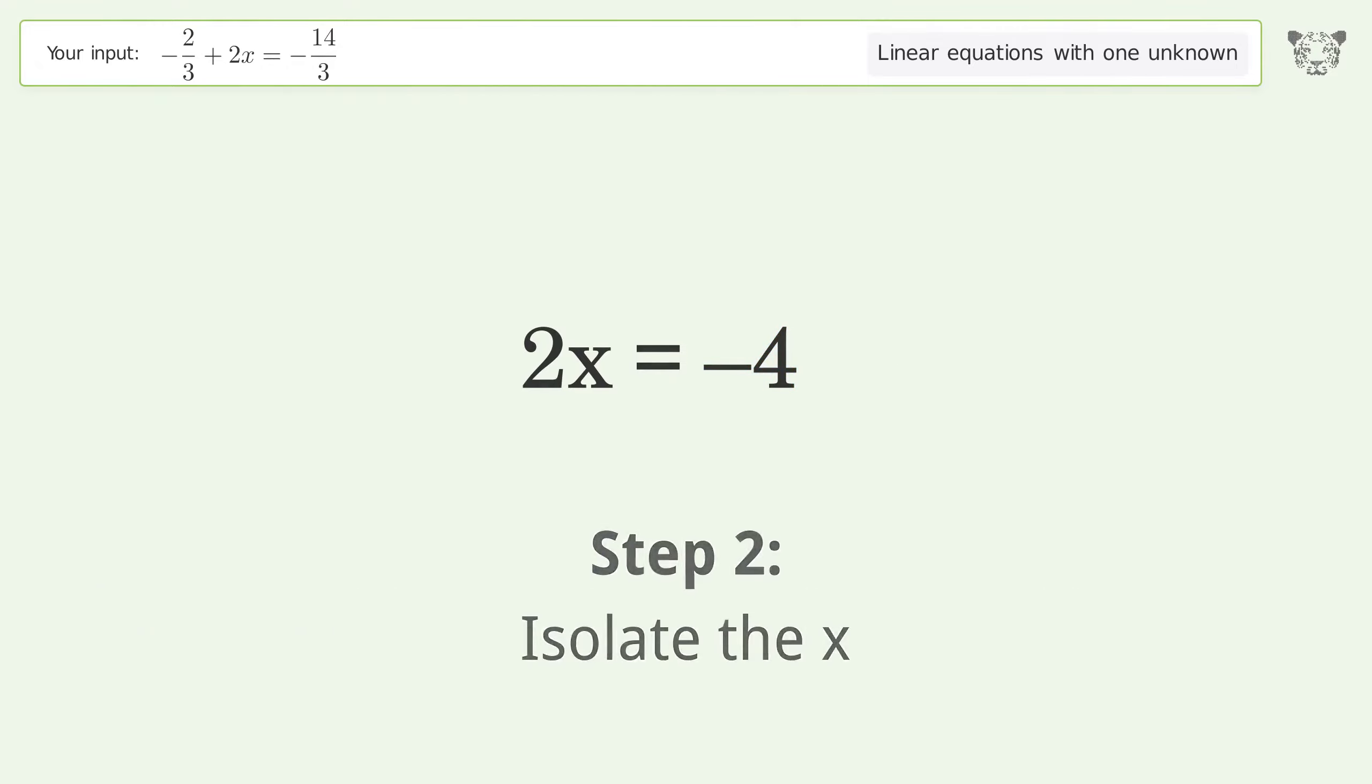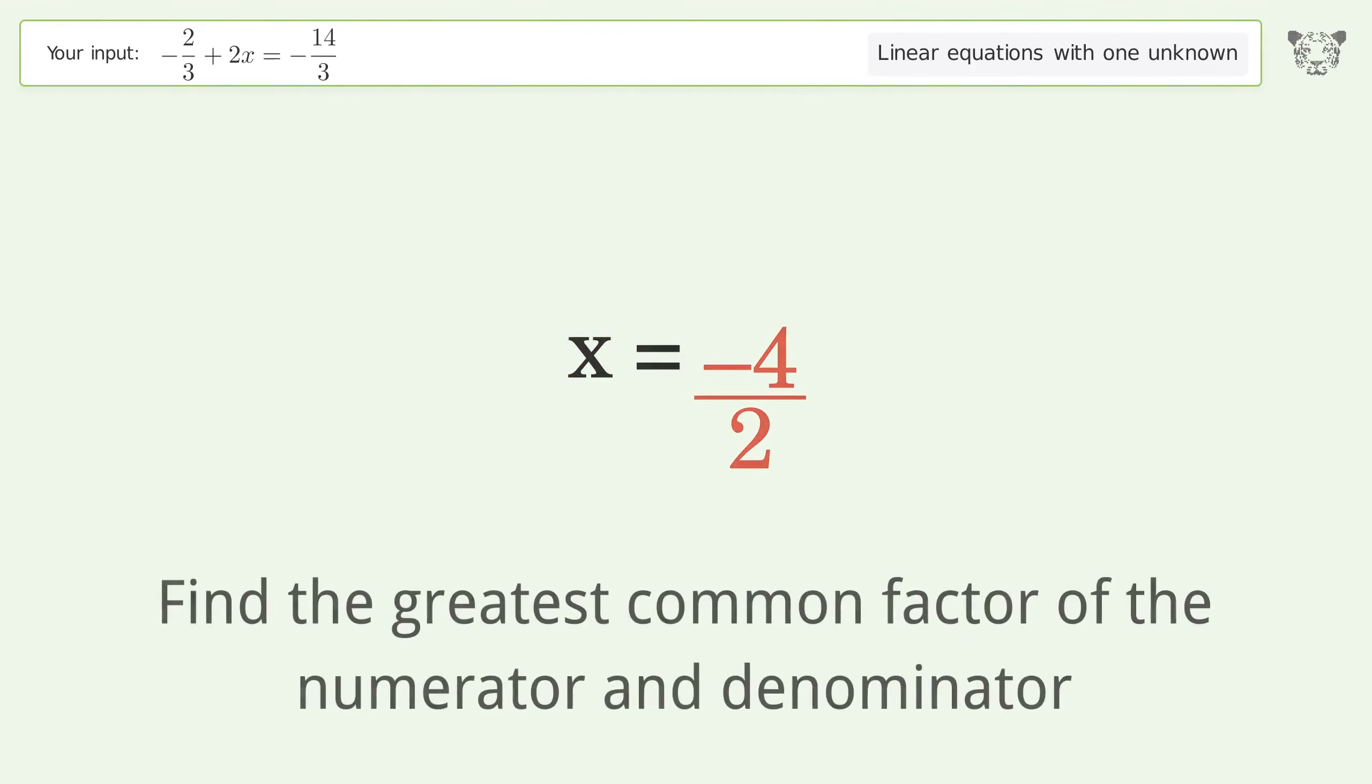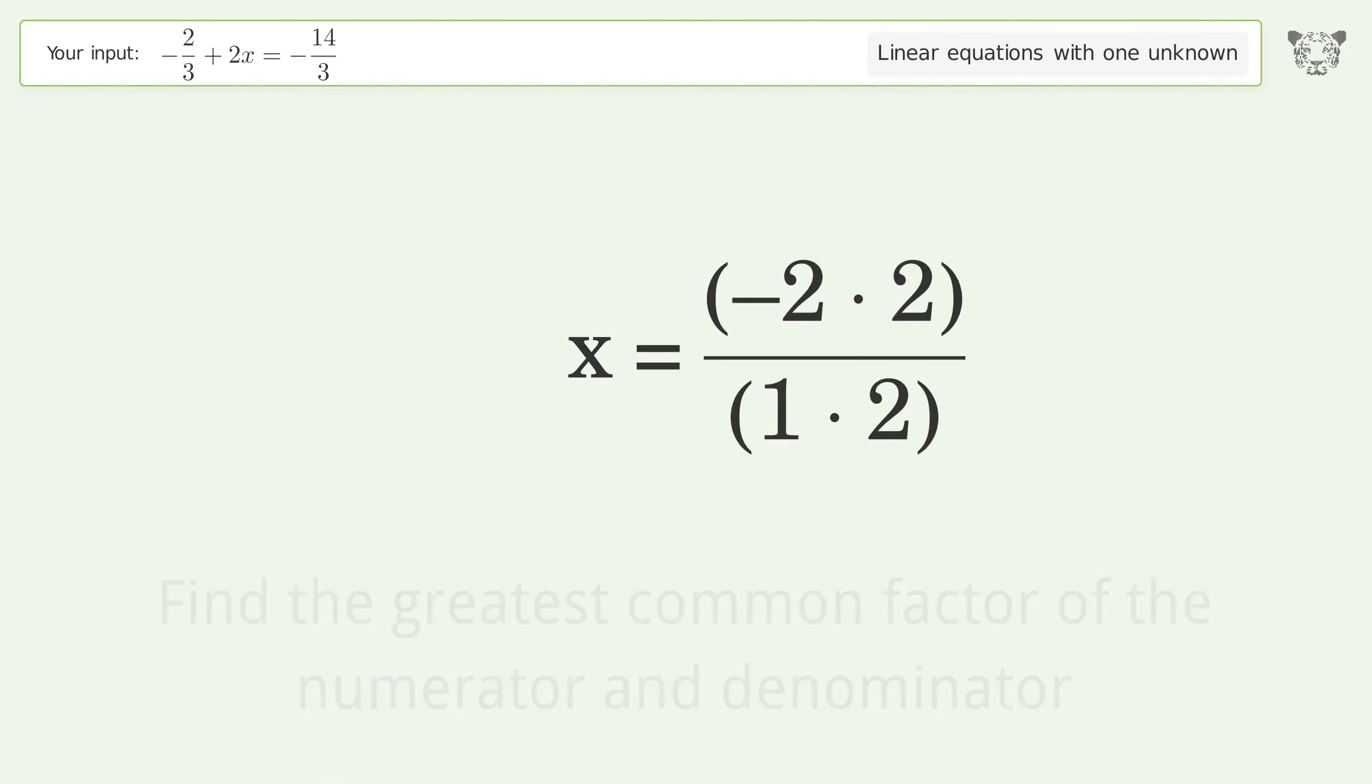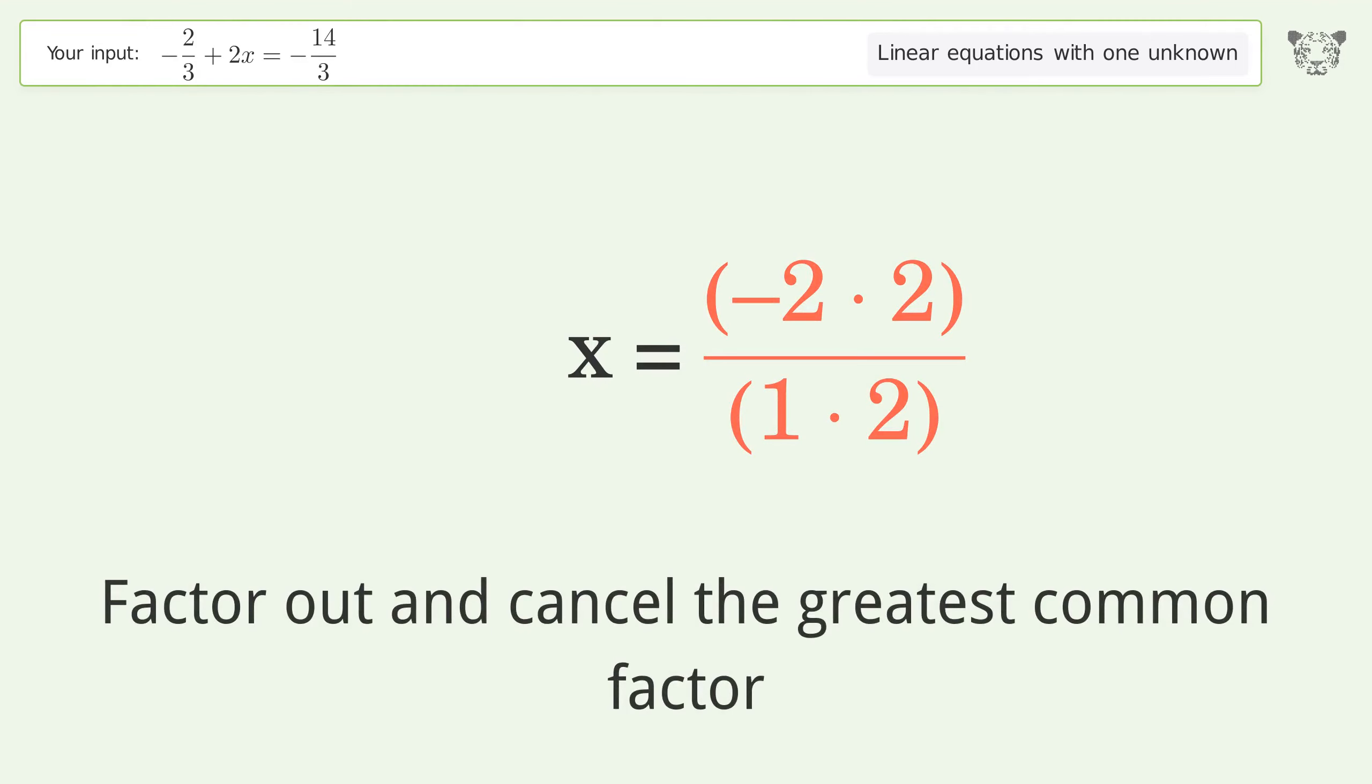Isolate the x. Divide both sides by 2. Simplify the fraction. Find the greatest common factor of the numerator and denominator. Factor out and cancel the greatest common factor.